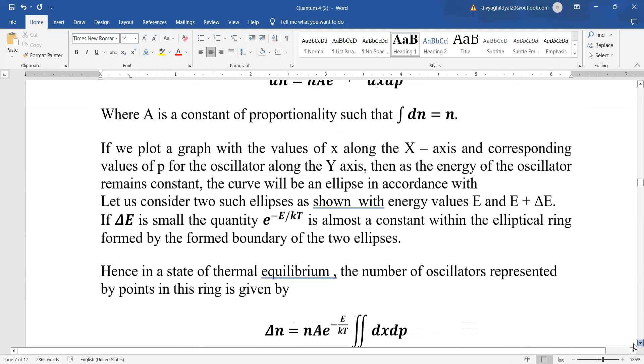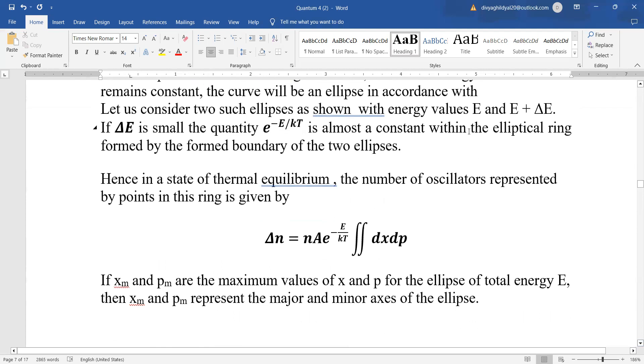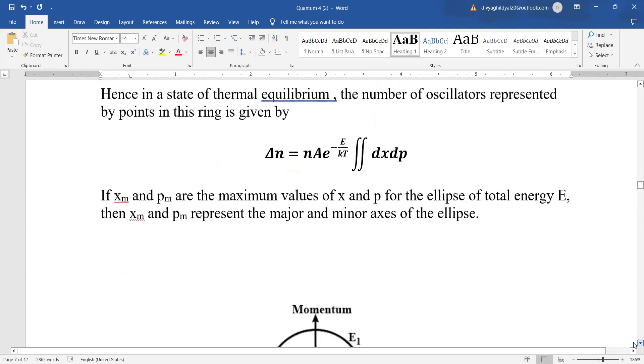Now, if you plot, let us consider that we have taken two ellipses such that the energy values of e and e plus del e are being considered in between these ellipses. Let del e be a very small quantity in almost constant. Hence, in thermal equilibrium, the number of oscillators represented is given by del n equal to n a e to the power of minus e upon kT integral dx dp.